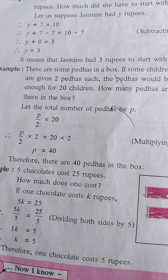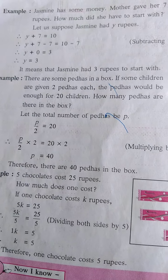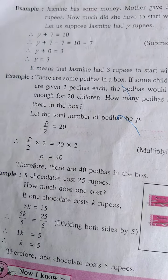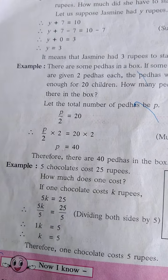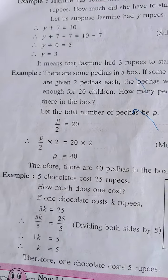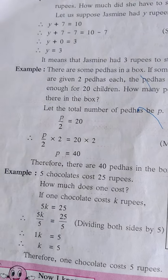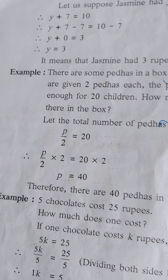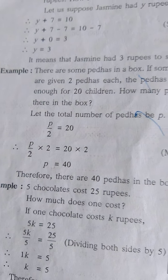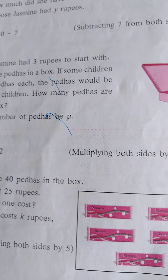Let us suppose Jasmin had Y rupees. Then Y plus 7. Mother gave her 7 rupees. So, Y plus 7 is equal to 10. This is our equation. Now, opposite operation — plus 7. Then what is the opposite operation of plus 7? Minus 7. Therefore, Y plus 7 minus 7, same operation on both sides, equals 10 minus 7. Subtracting 7 from both sides.